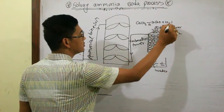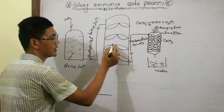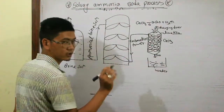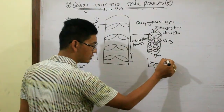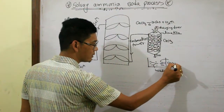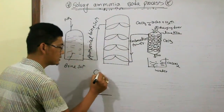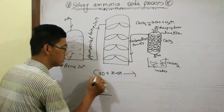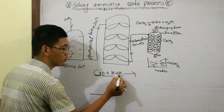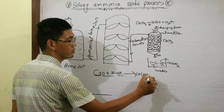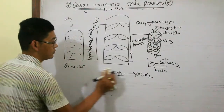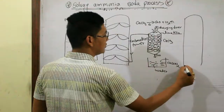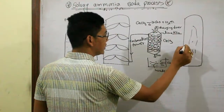CaCO3 decomposes to give CaO plus CO2 gas. Calcium oxide is then dropped into water. Calcium oxide reacts with water to finally give calcium hydroxide — Ca(OH)2.